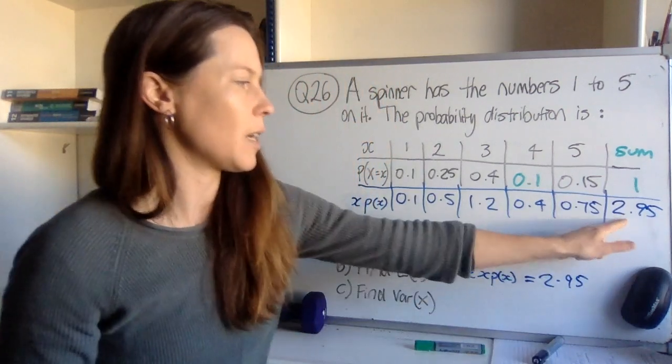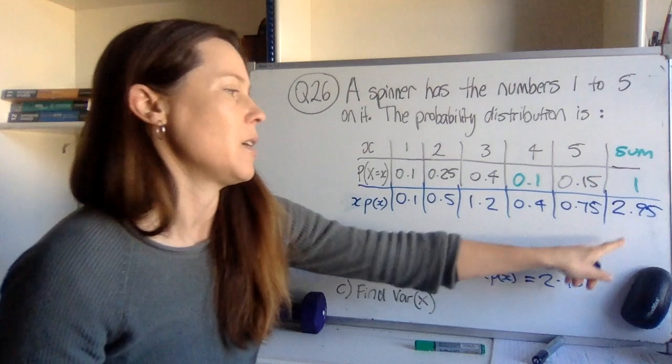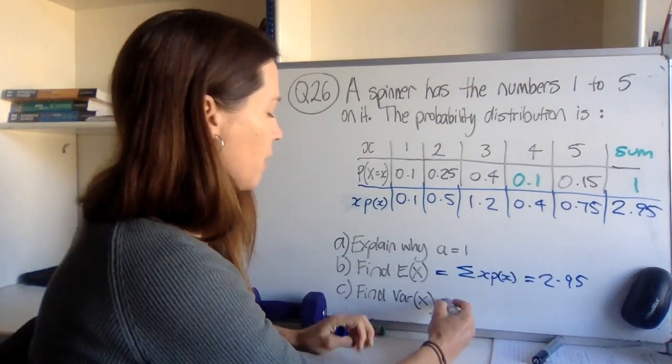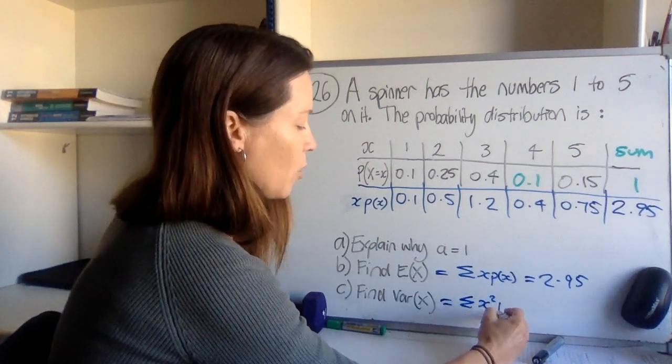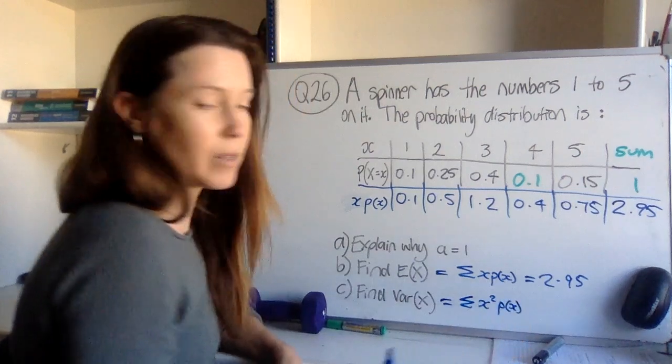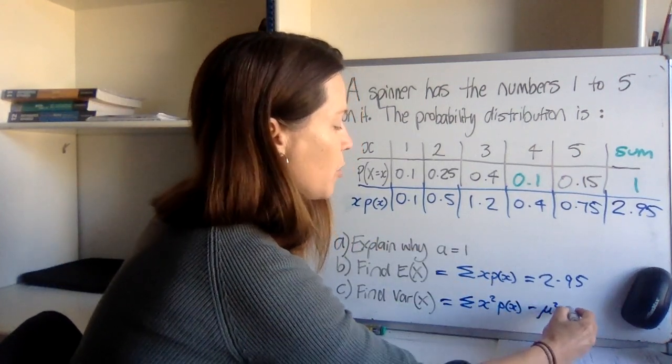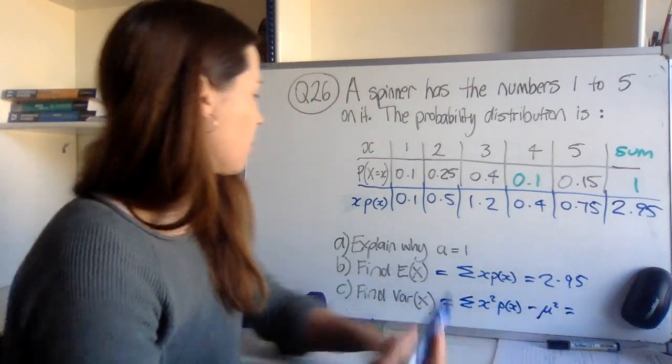Now as soon as you get a number here that is not a whole number or an integer, it makes sense to use the second formula for variance. It's just going to be a little bit easier to calculate. And the second formula says let's sum all the x squareds multiplied by their probabilities, and then at the very end subtract mu squared. So writing down that formula helps keep it in your head what you need to do.